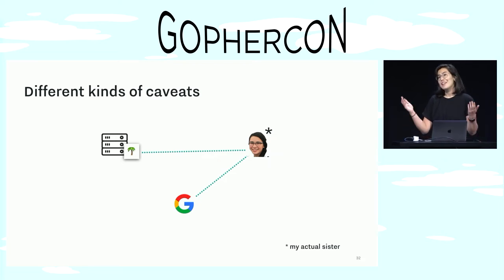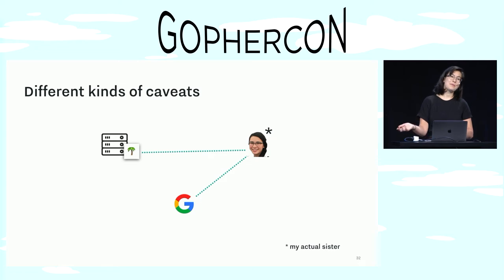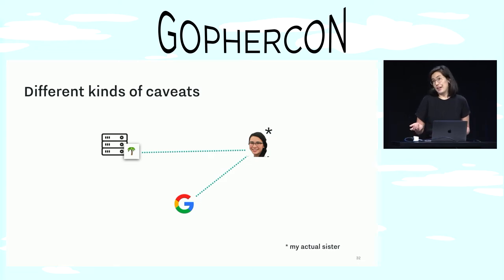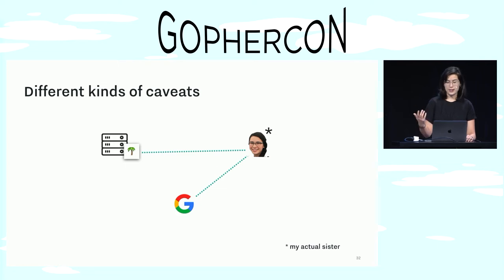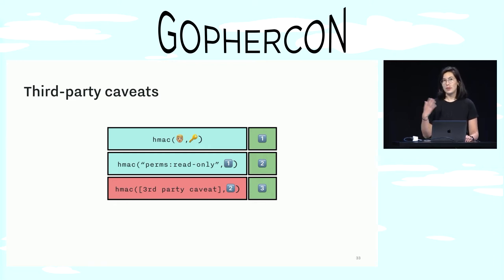The classic example here is an identity service. For example, if I want to share my vacation pictures with my family but I don't want to manage user accounts for everyone, I might use Google as my identity service. So as long as my sister is logged into her Google account, she can access the pictures. And they're added largely the same way that first-party caveats are — they also get added through HMAC chaining.